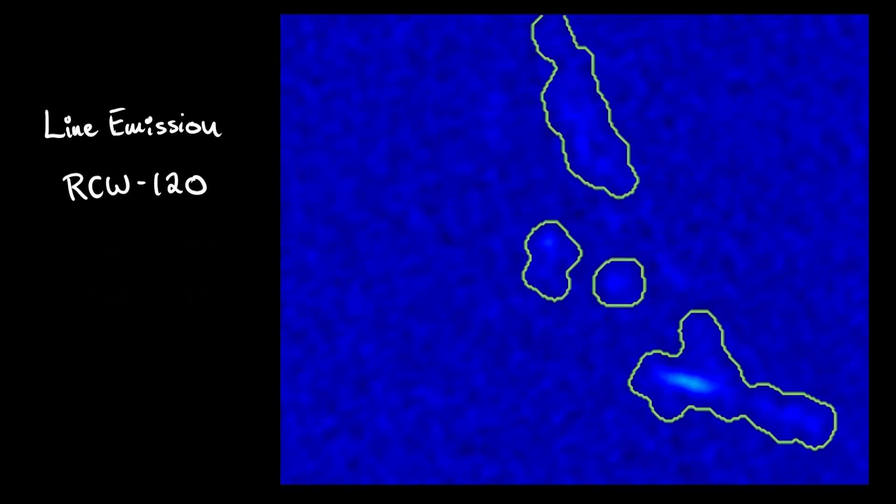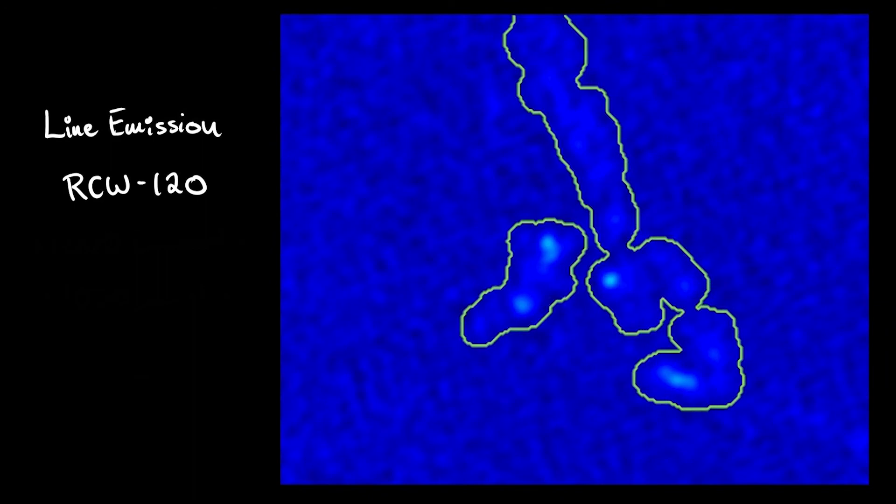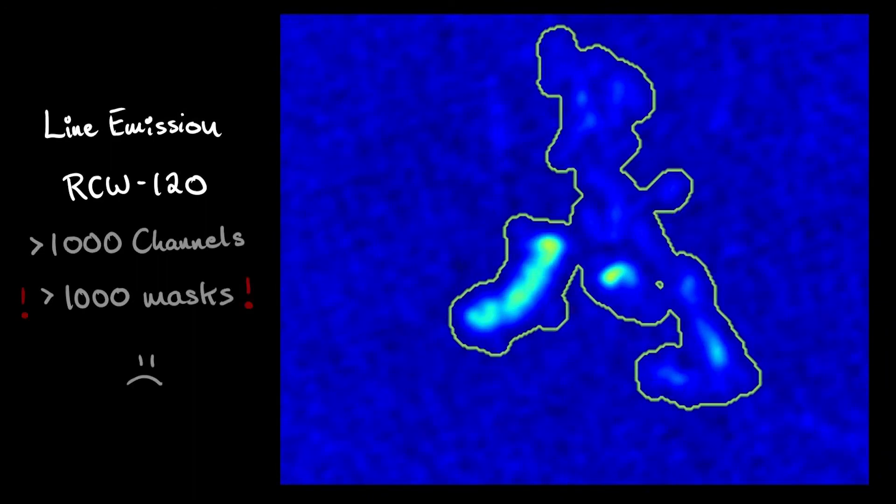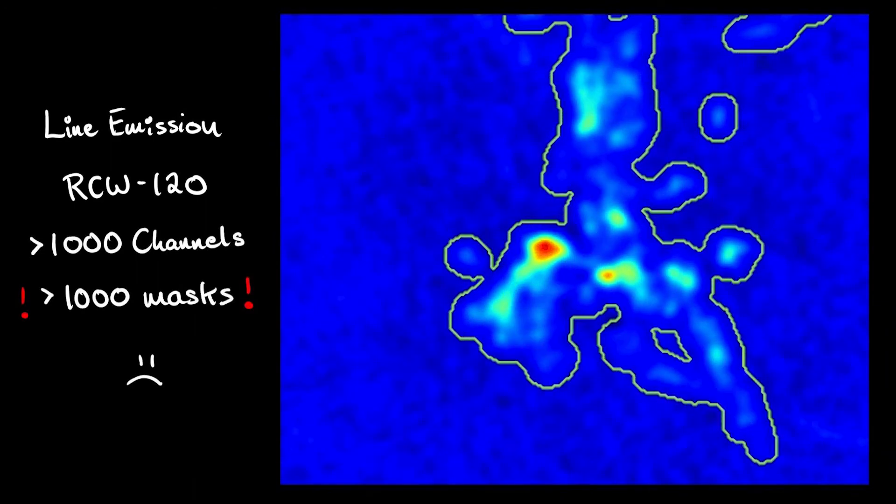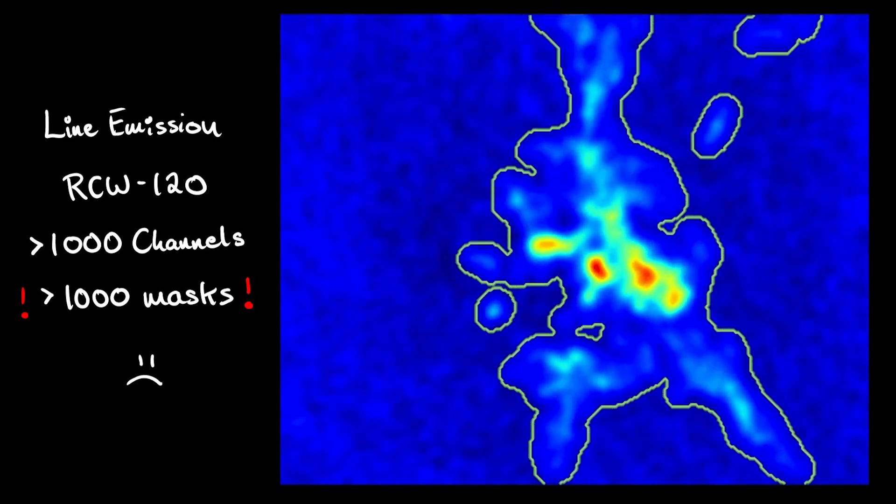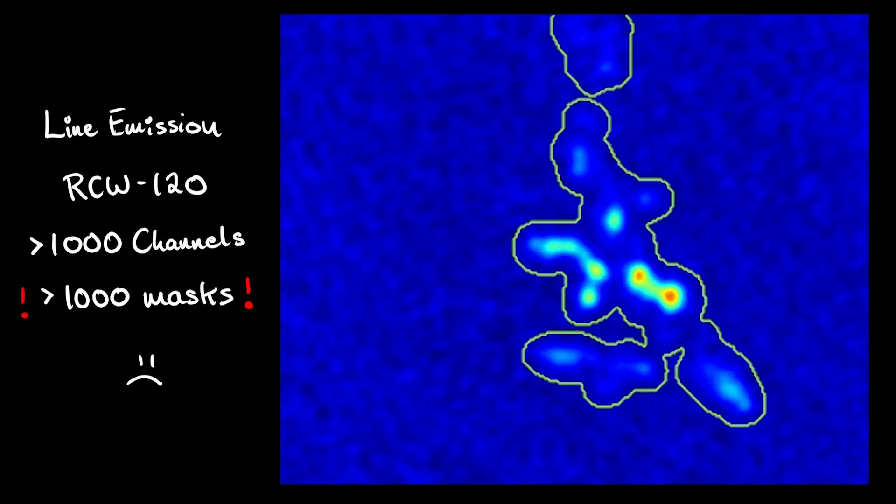The morphology of the emission changes significantly from channel to channel over many hundreds of channels. To make masking cubes like this feasible, algorithms have been developed to automate this procedure.